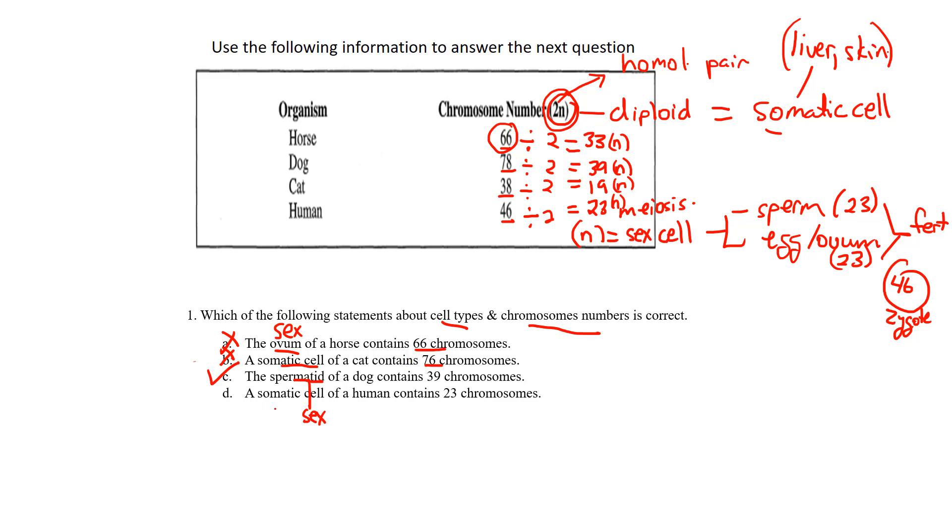D, let's just try this one: somatic cell of a human is 23. That's not true. We know a somatic cell 2n is 46. What's 23 is our gametes or sex cells or ovums. So correct answer in this case is C. Any problems with that, give me an email and we can go over it. Thanks guys.